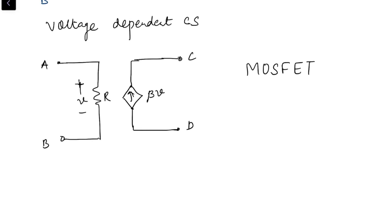That covers all the different sources which will be present in different circuits that we will be analyzing in the next videos using different methods of analysis. One important thing to note: independent sources have a known internal resistance — either 0 or infinite — while in case of dependent sources, we have no idea about their internal resistance. So we can state the value of internal resistance for independent sources only, not for dependent sources. In the next video, we will start with methods for analysis of DC circuits.